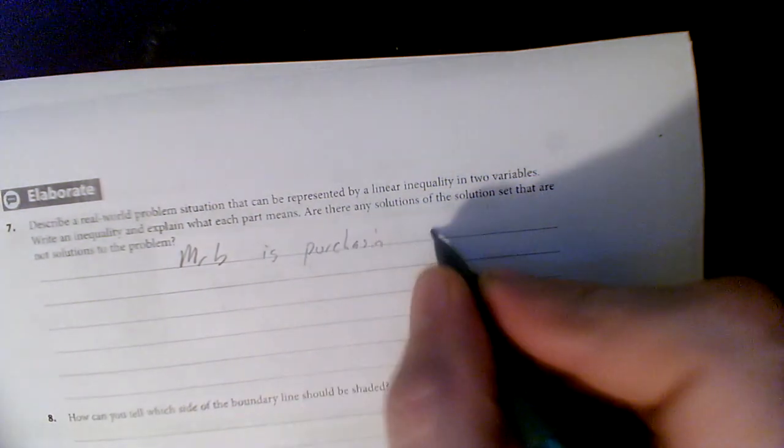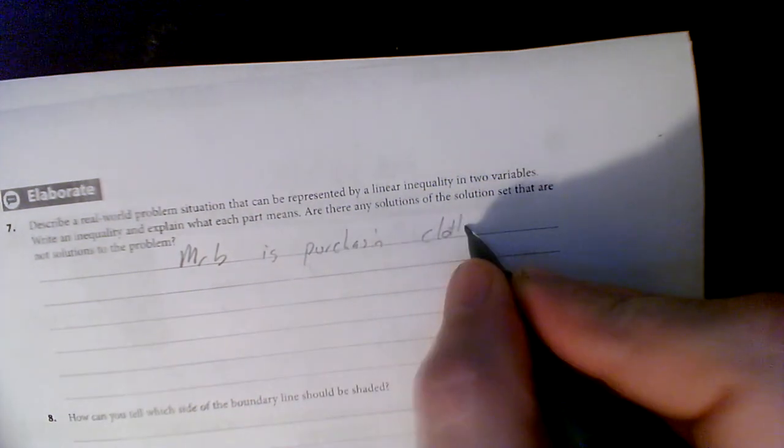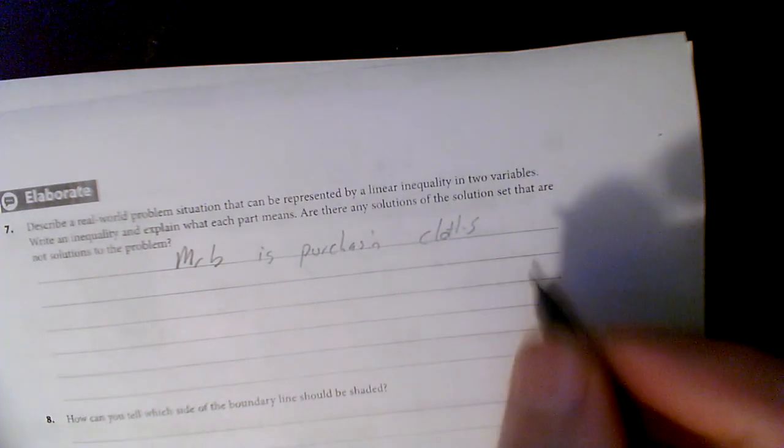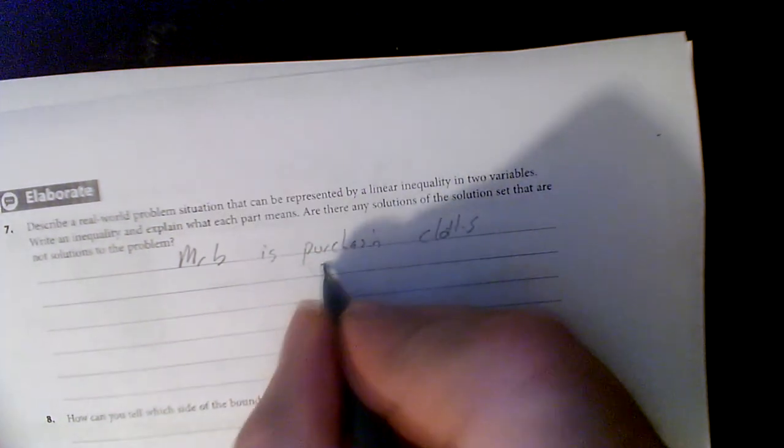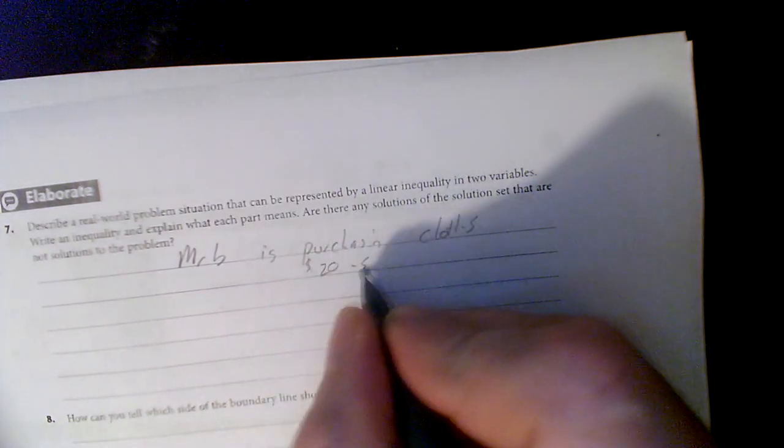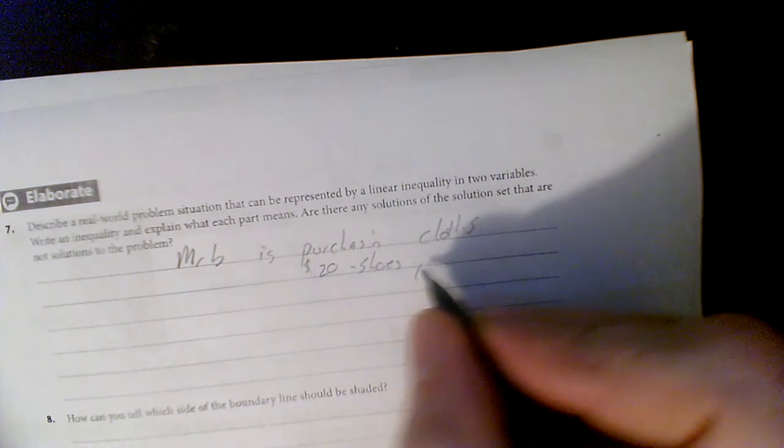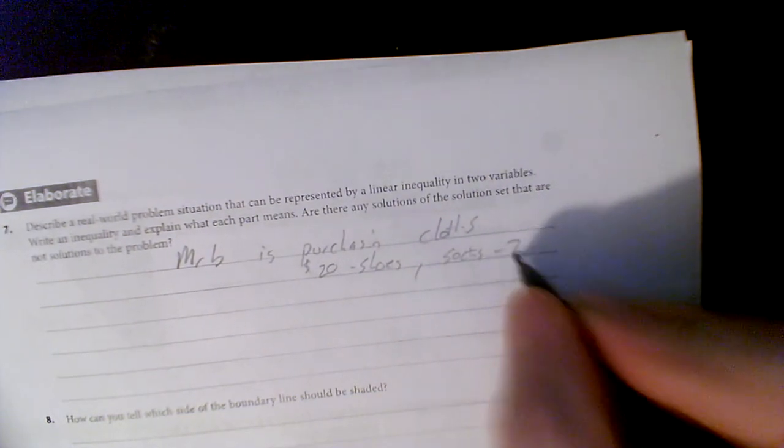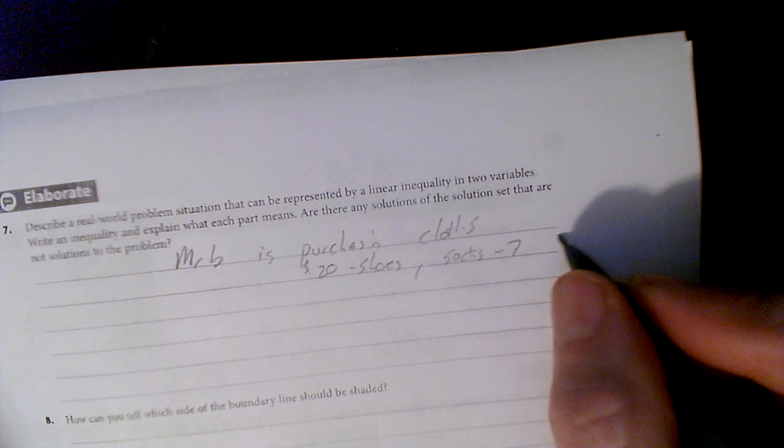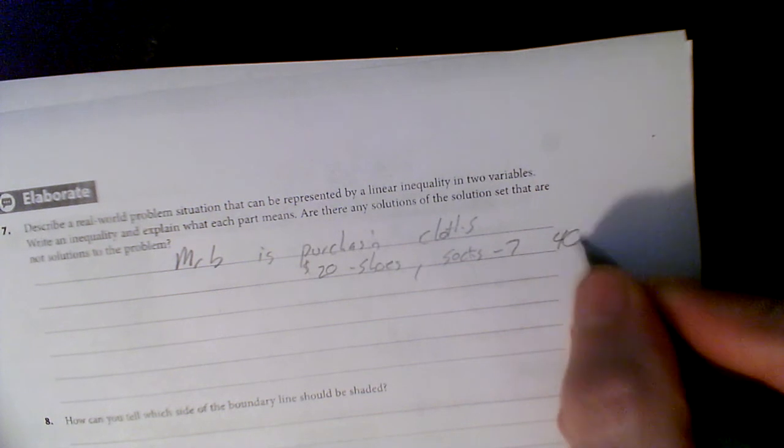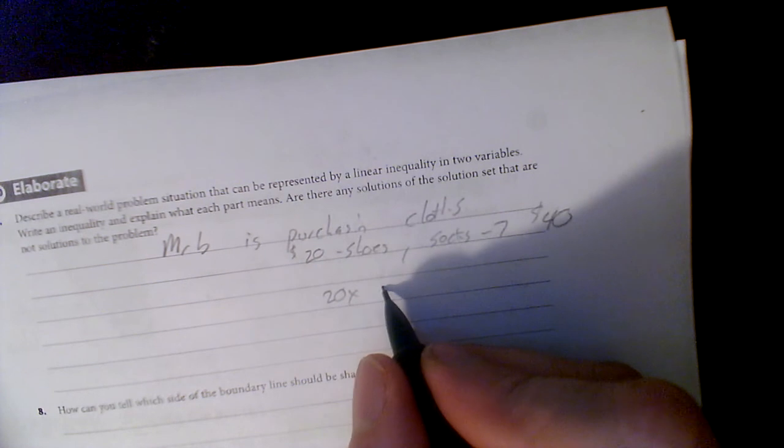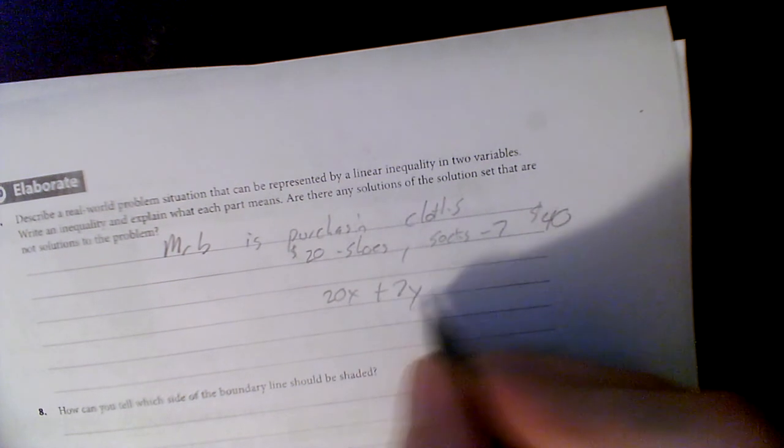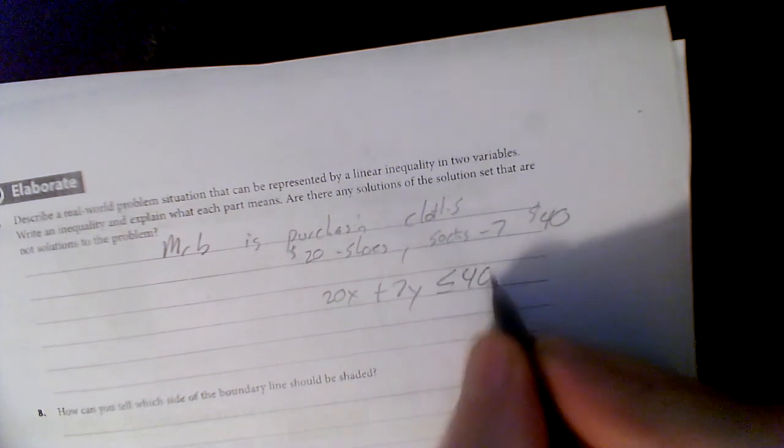...is purchasing clothes. I could write one if I wanted to. I could say shoes are $20, socks are $7, and I have $40 to spend. I could say the number of shoes I buy, 20x, plus the number of socks I buy, 7y, is less than or equal to 40. That's good.